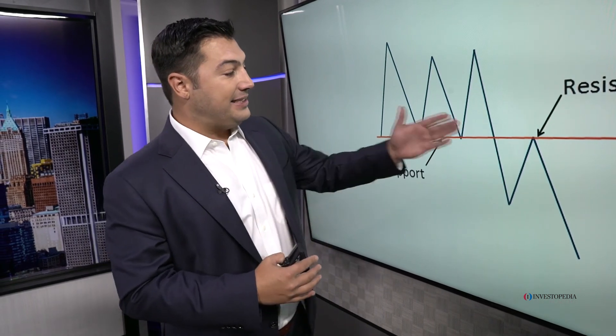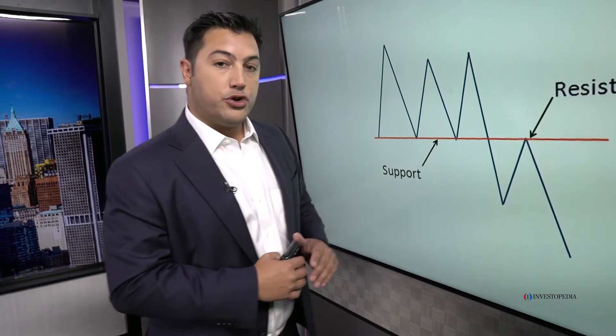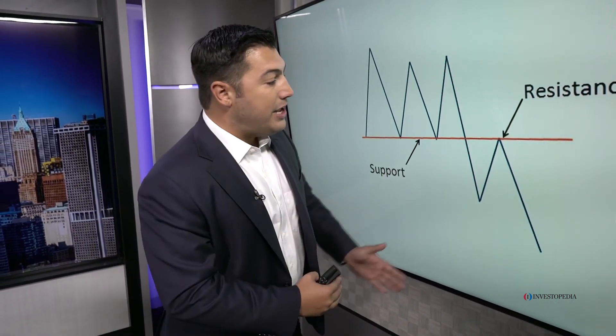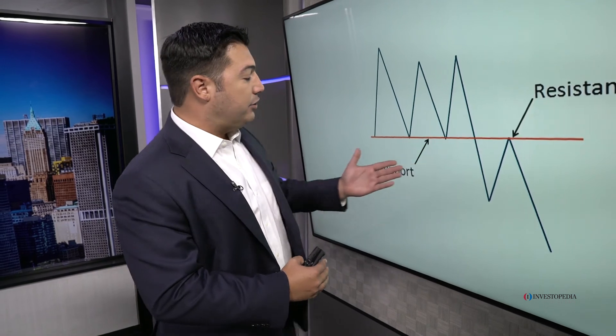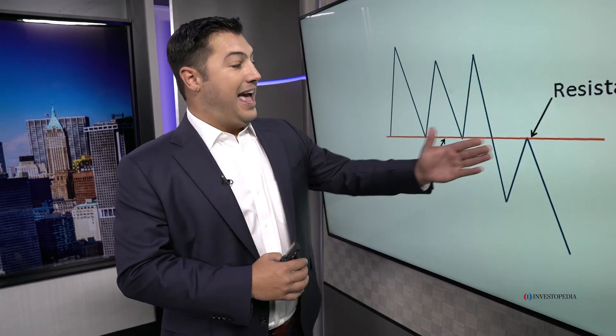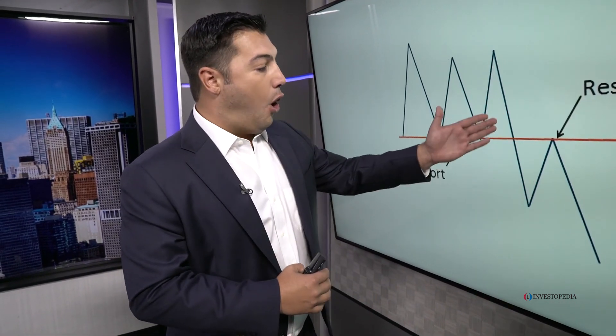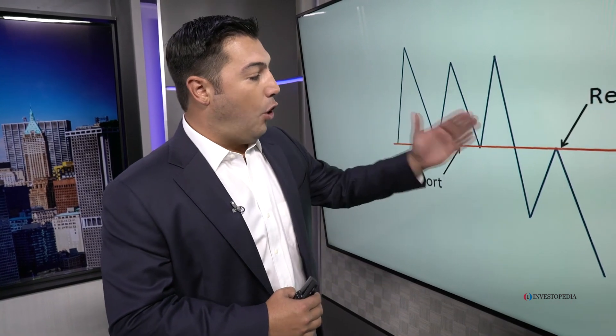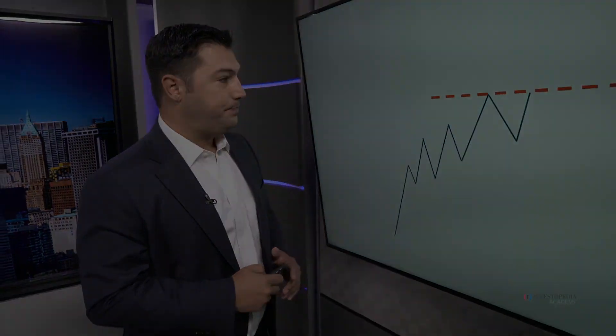The market is proving to us — it's not an opinion, this is a fact — that sellers are now in control at that level. So when we do get that kickback to former support, that turns into resistance, as the market already showed us there's an overwhelming amount of supply relative to demand. Again, that's polarity 101.